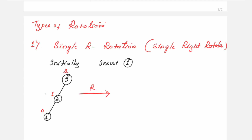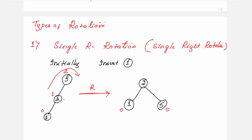When you rotate in the right direction, node 5 comes down, node 2 is placed at the center, and node 1 is at the bottom. After the right rotation, the balance factor for node 1 is 0, for node 5 is 0, and for node 2 is 0.